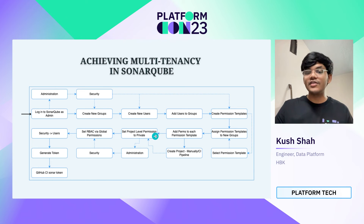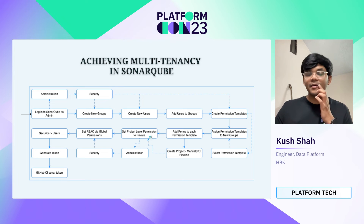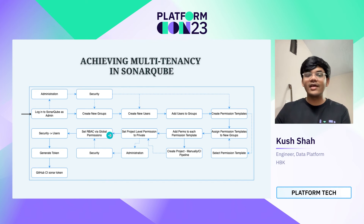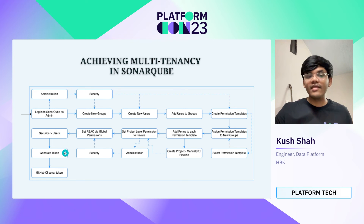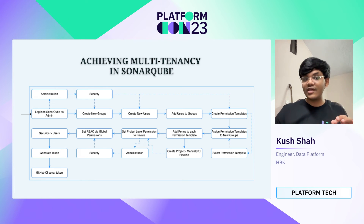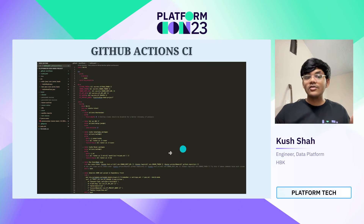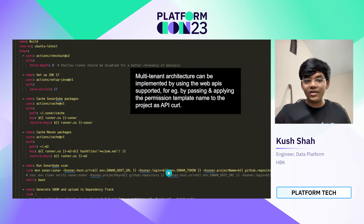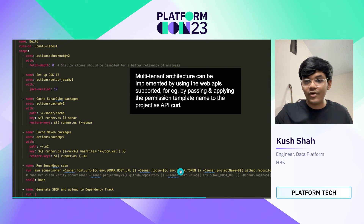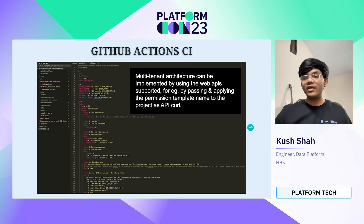One key feature to enable multi-tenancy in SonarQube is to ensure that the project-level permission is set to private. We can also set RBAC rules for global permissions, like who can create projects. Once the whole process is done, we go back to the Users tab and generate a token. This user-level token is used as the sonar token in the GitHub CI pipeline — as we saw in the SonarQube Action, it requires a sonar token for authentication purposes.